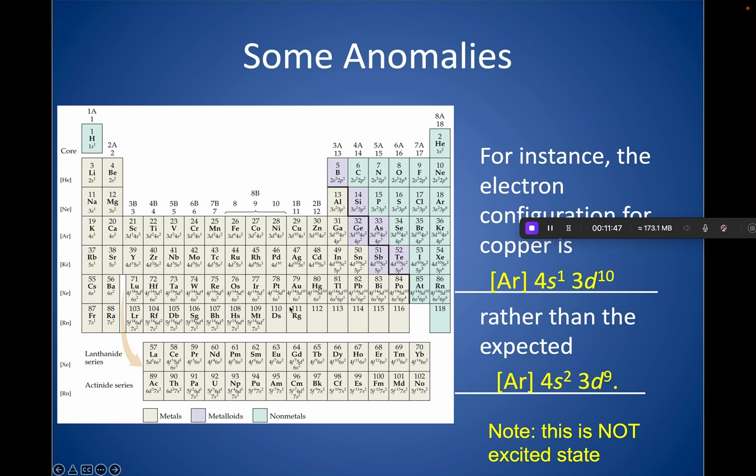So for instance, copper, we would expect it to be 4s2, 3d9, but in actuality, one of the electrons from S jumps into the 3d, and you get 4s1, 3d10. This is not excited state. This is just the ground state for copper. This happens a lot of the time when the D electrons are almost filled. It tends to be more stable to have a filled D rather than an almost filled D. So it happens in this D9 category, where it jumps. One of the electrons from S actually jumps and turns it into D10.